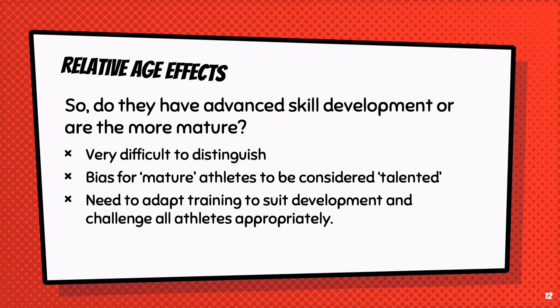Bigger, stronger, faster kids are more likely to bowl faster or hit the ball further — but does that mean they are better cricketers, or just bigger, stronger, and faster than everybody else for now? The reason we need to consider this question is to firstly avoid the bias towards mature athletes, but also to make sure we adapt our training to suit the different developmental stages of all our athletes.